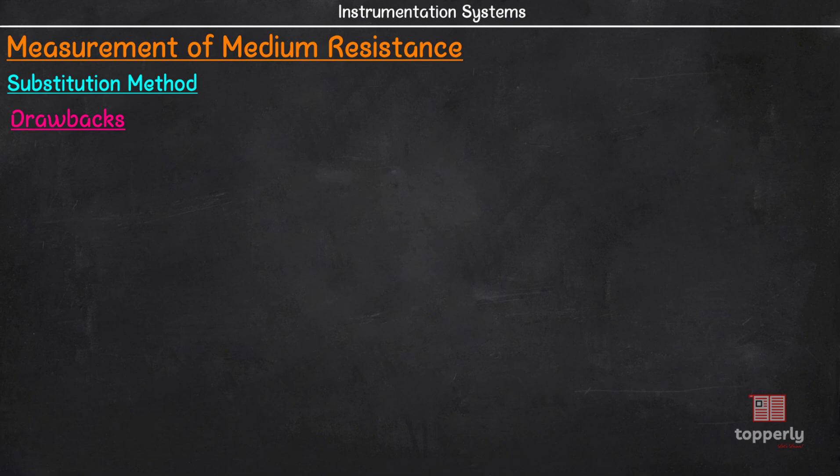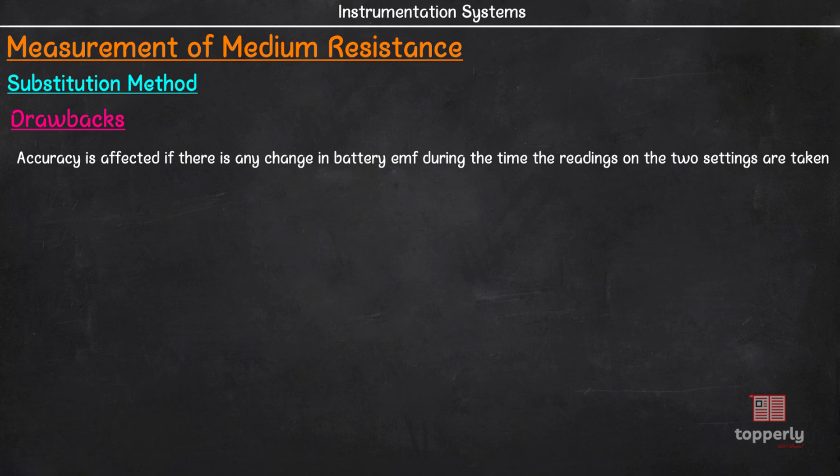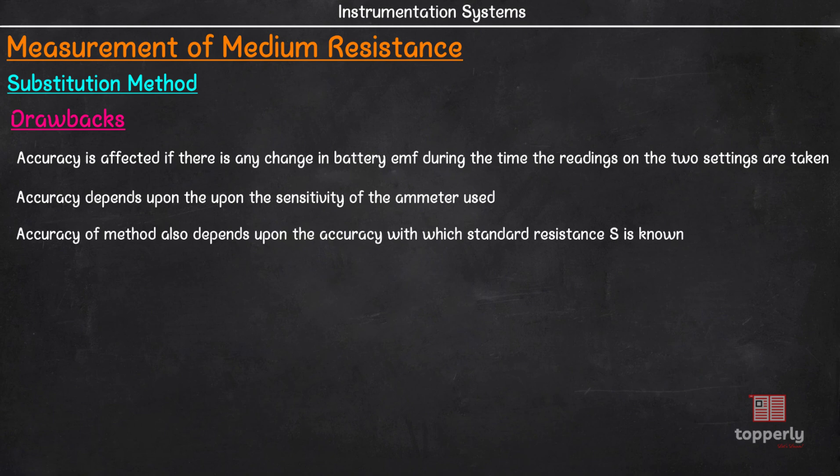But, keep in mind that, the accuracy of this method is destroyed if there is any change in the battery EMF during the time the readings on the two settings are taken. Thus to avoid errors, a battery of ample capacity should be used so that its EMF remains constant. Also in this case, the accuracy also depends upon the sensitivity of the ammeter used. The accuracy also depends upon the resolution of standard resistance S.